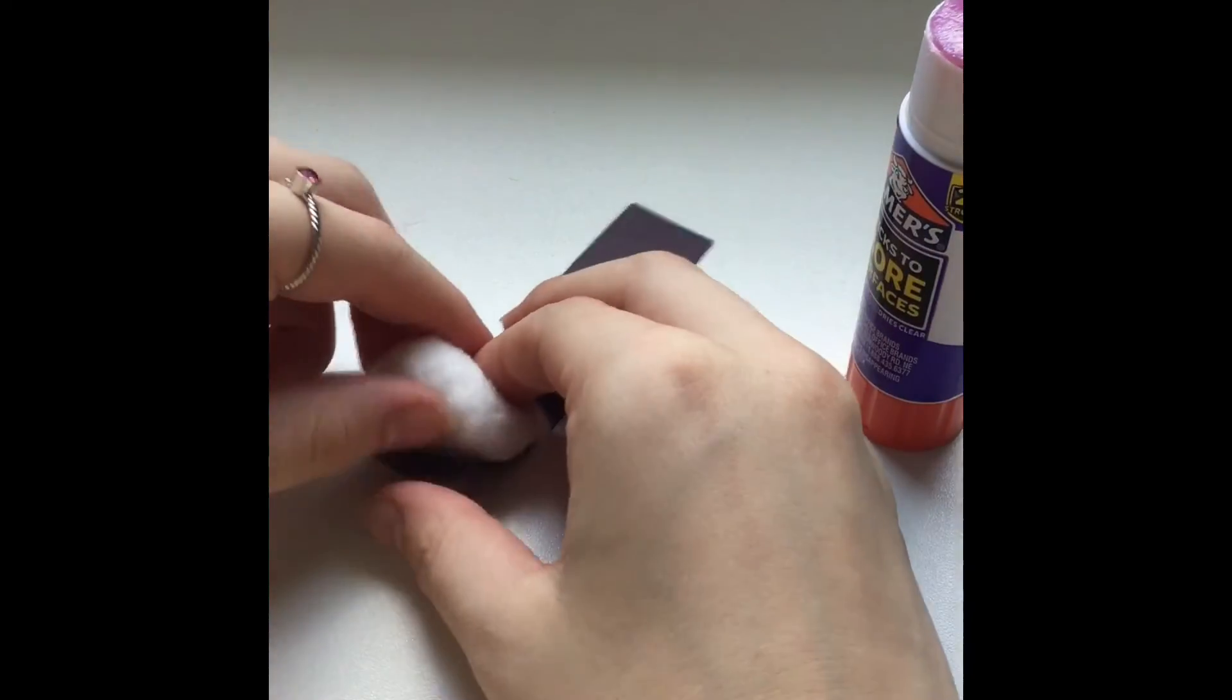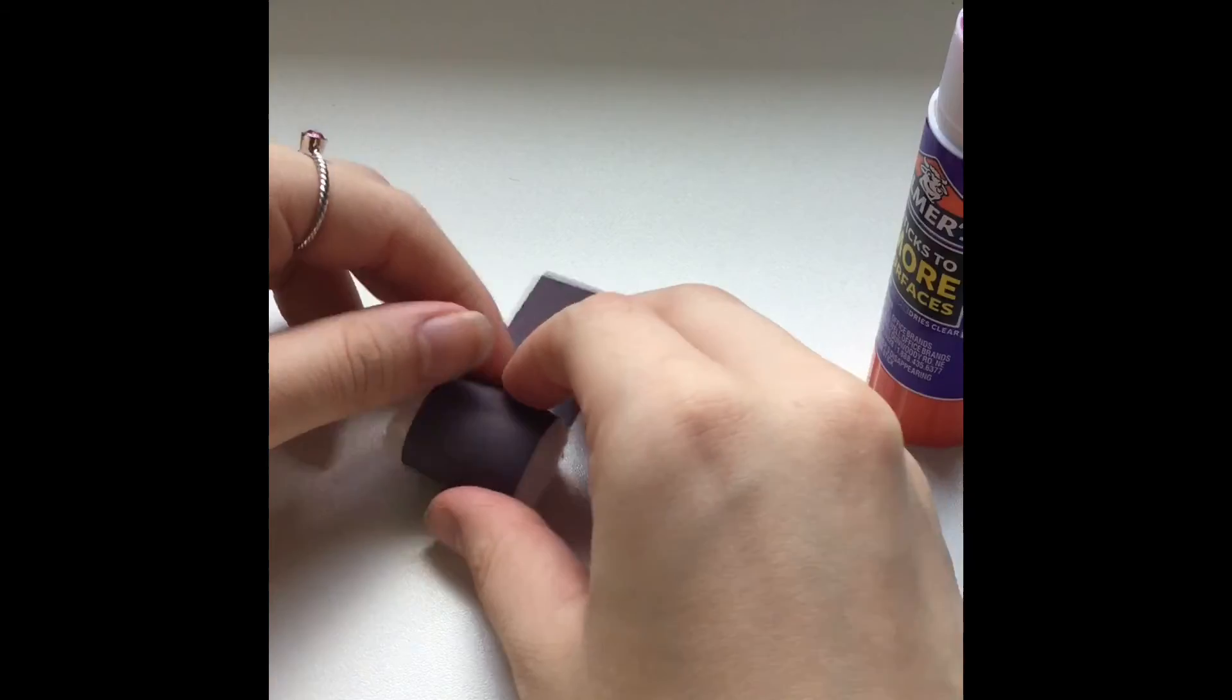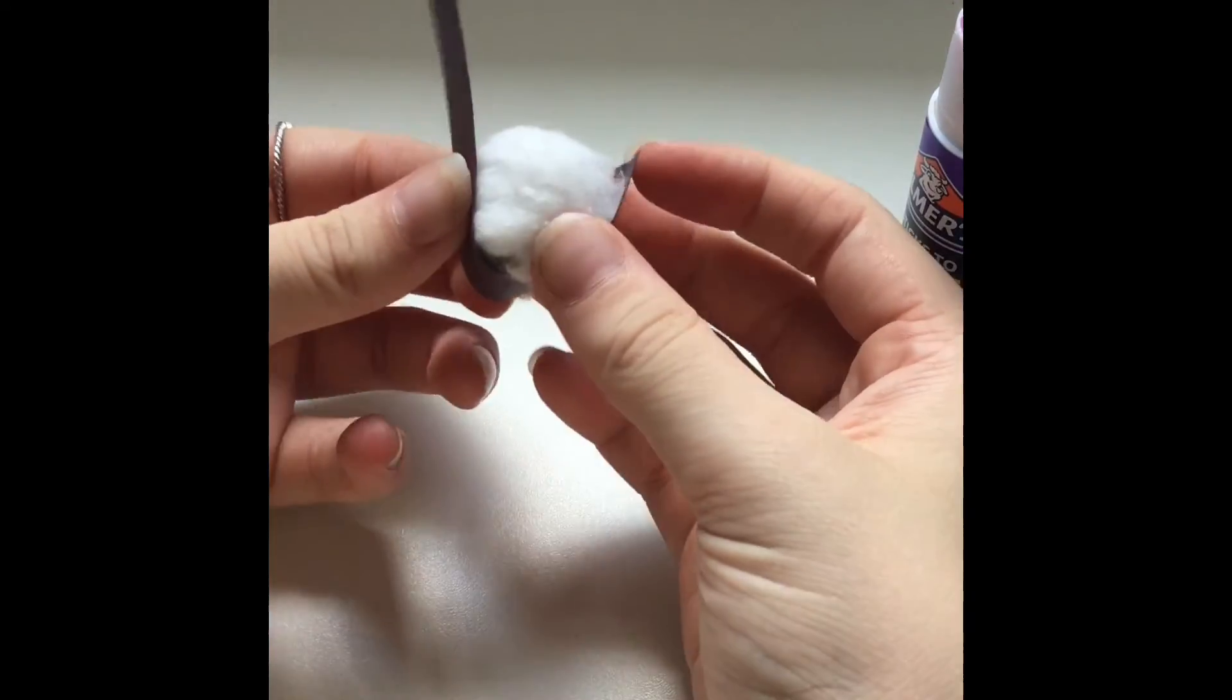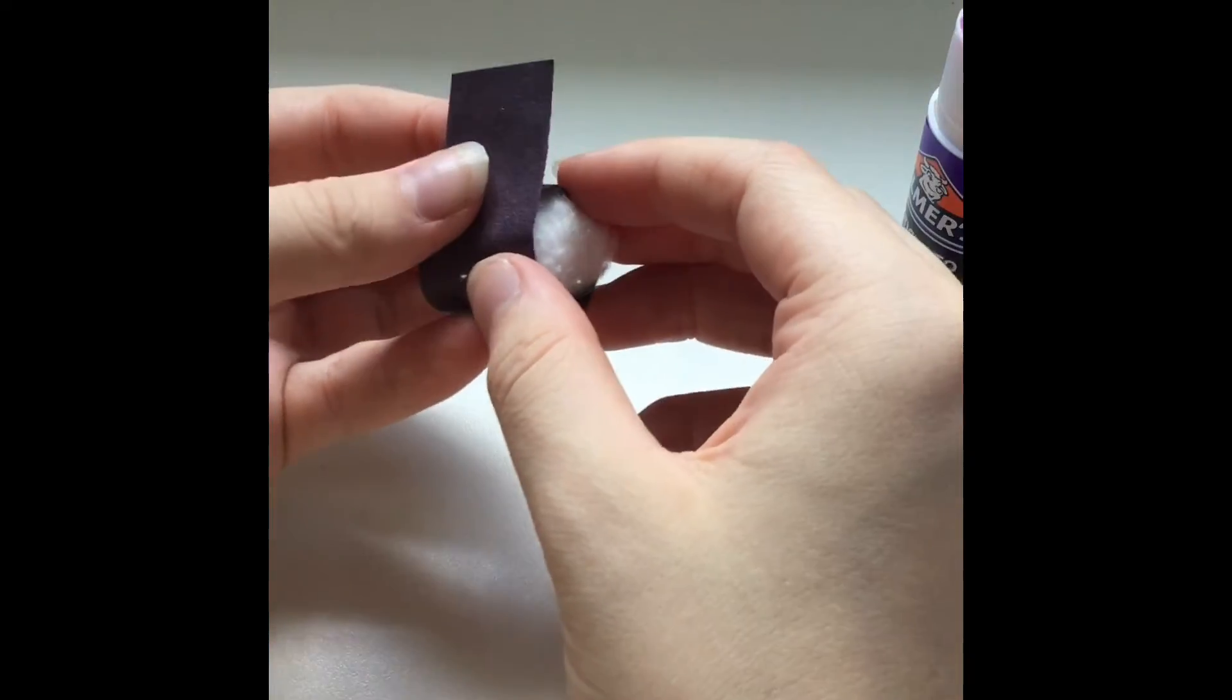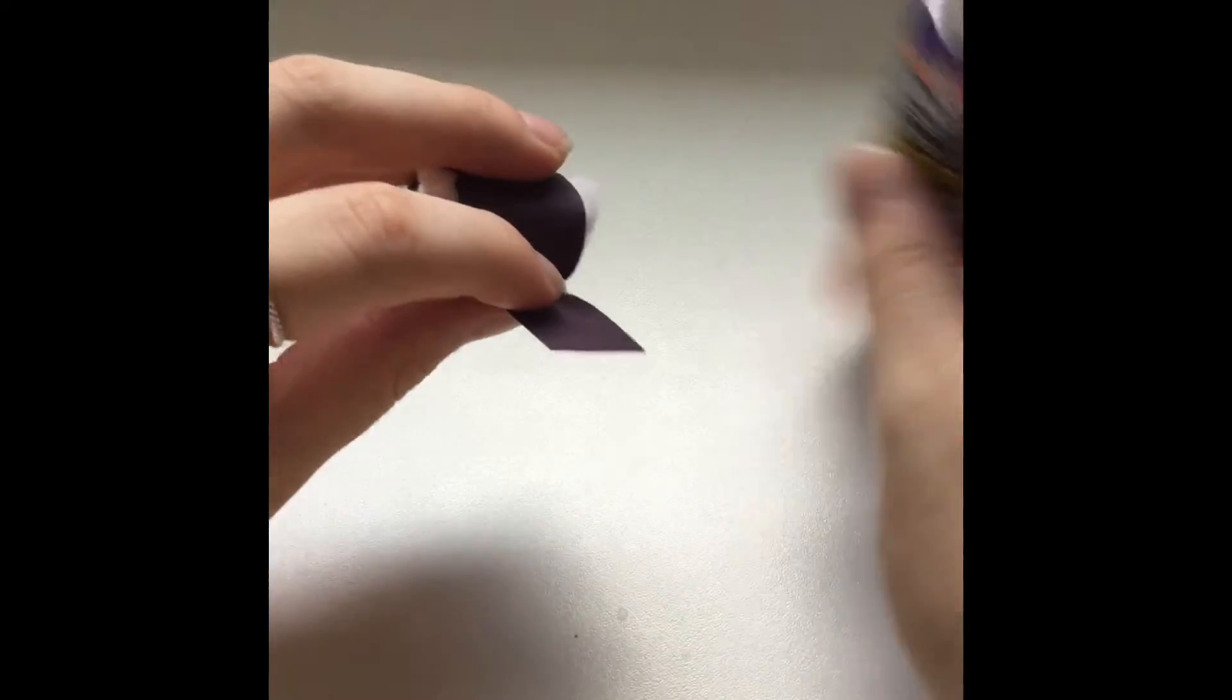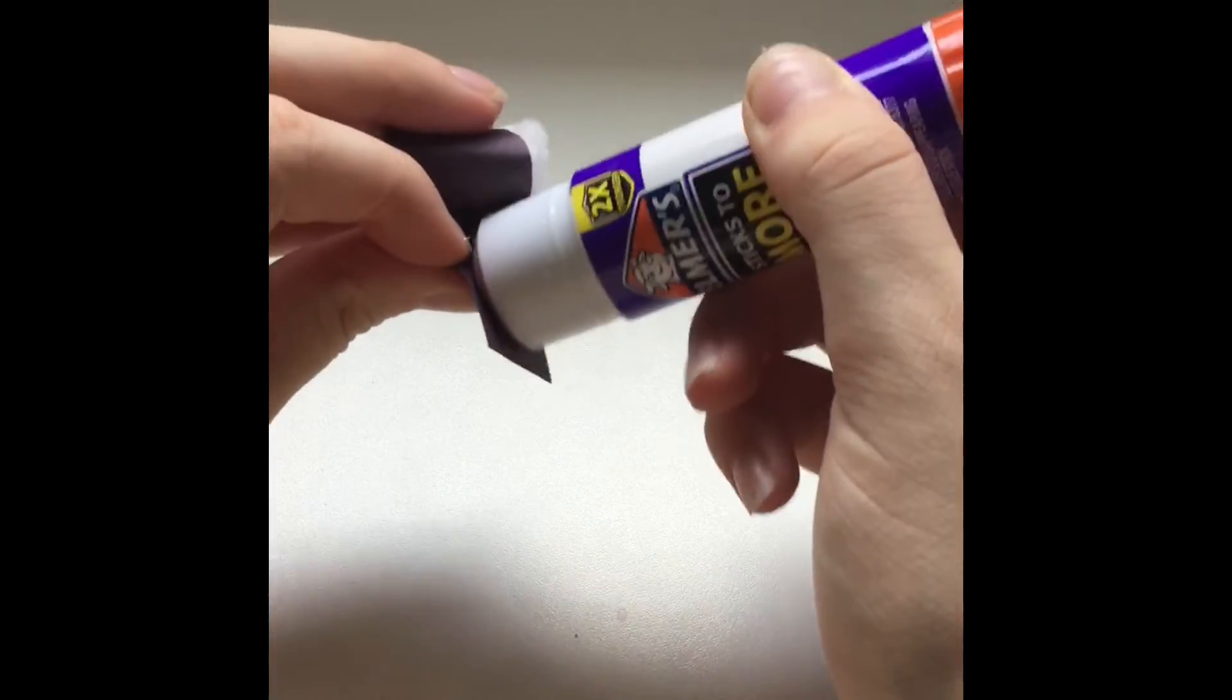And then you're going to take it and roll it up. I'd leave it on the loose side. So roll it and then take your glue and put glue on the end and seal it shut.